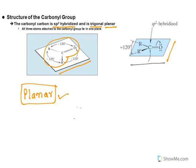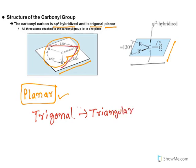Like benzene, we have an example. Benzene is also a planar molecule. Next, trigonal. Trigonal literally means triangular. When you look at the arrangement of these atoms, they appear in a kind of triangle form. Hence, they are known as trigonal planar. So the molecule lies flat on a plane with the shape of a triangle — that is what you mean by trigonal planar.